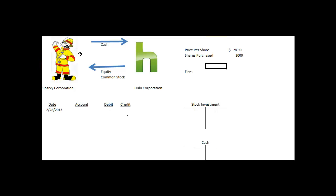The problem states that we're Sparky Corporation, and we're investing in Hulu Corporation. We are going to invest cash and in exchange get equity or common stock from Hulu Corporation. So we need to record the acquisition of that stock.